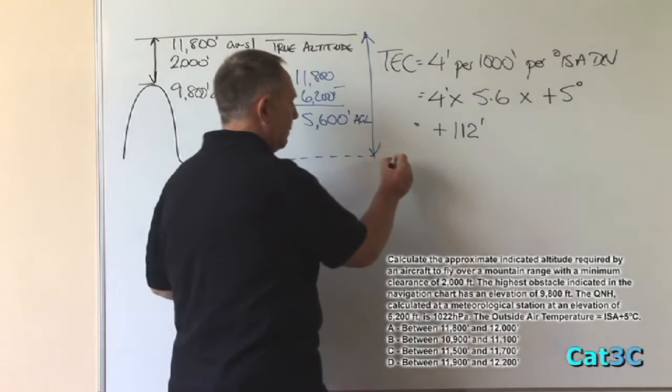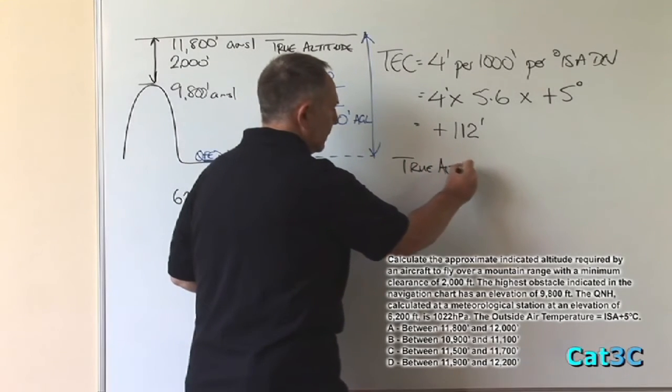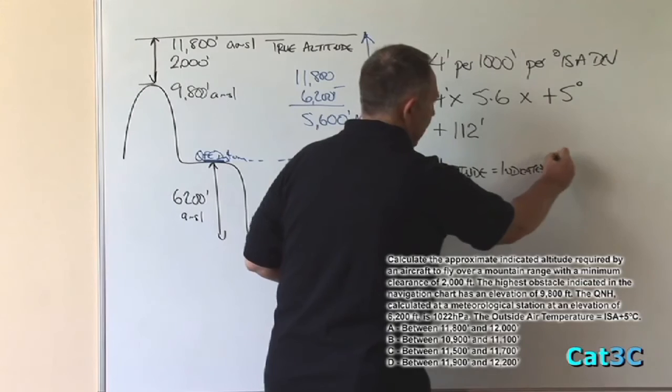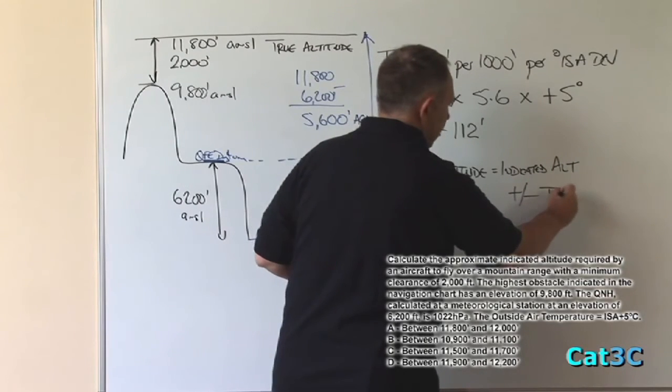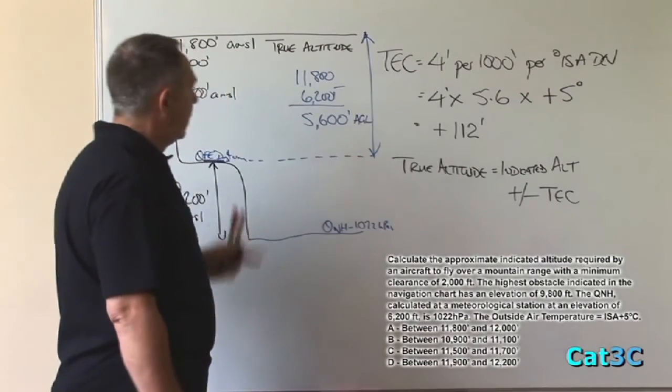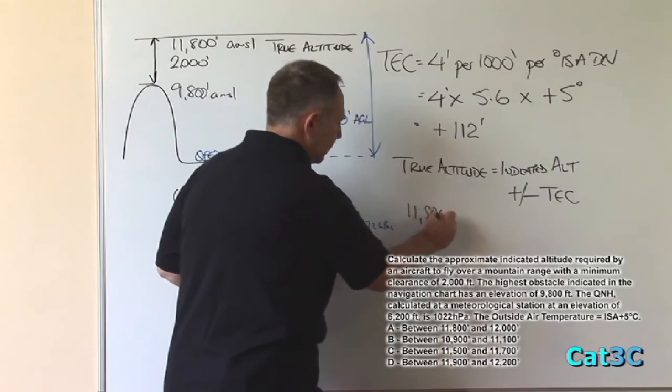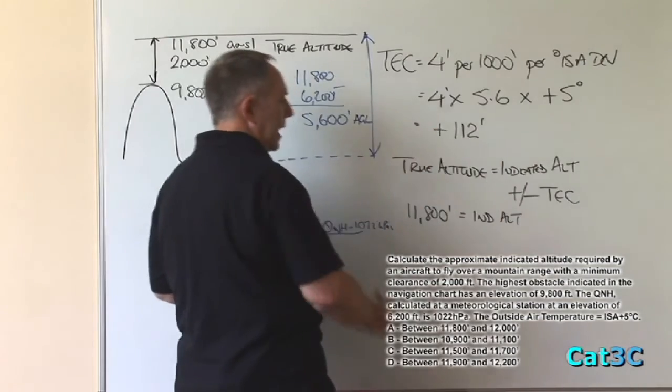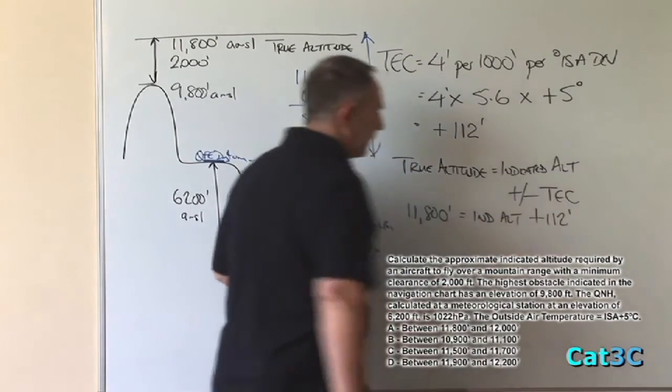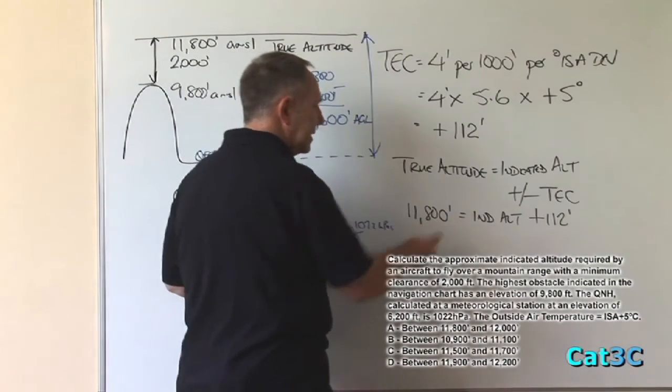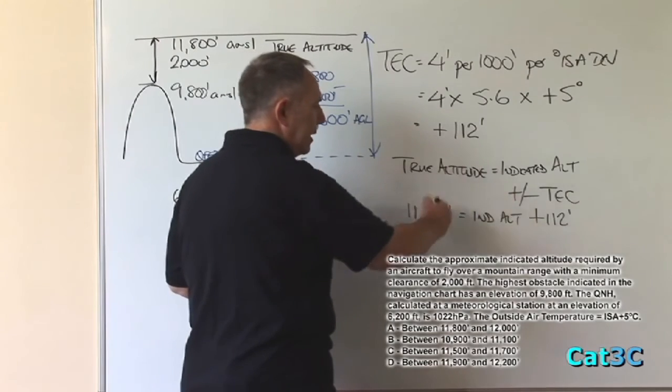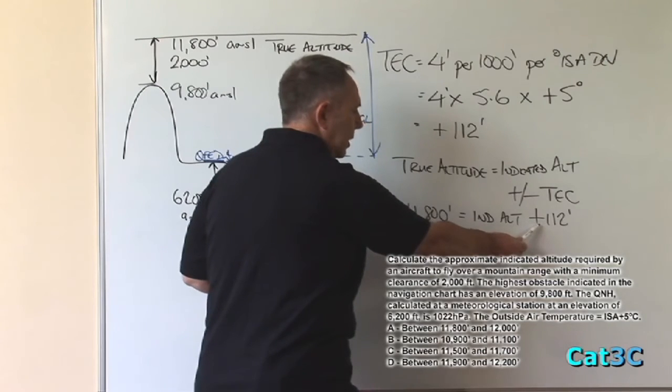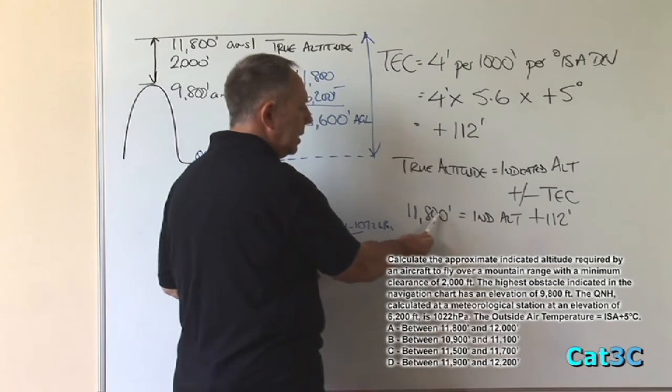True altitude is equal to indicated altitude plus or minus the temperature correction. We know the true altitude is 11,800 feet. The indicated altitude is what we're trying to find, and we know that the error is plus 112 feet. We now need to transpose this formula to put indicated altitude on one side of the equal sign by itself, and the numbers together on the other side of the equal sign. In order to do that, we have to take plus 112 feet over to the other side of the equal sign, where the plus symbol changes to a minus symbol.